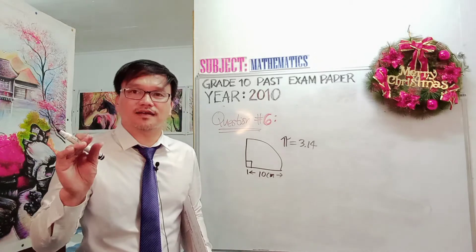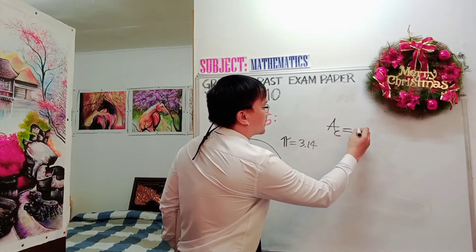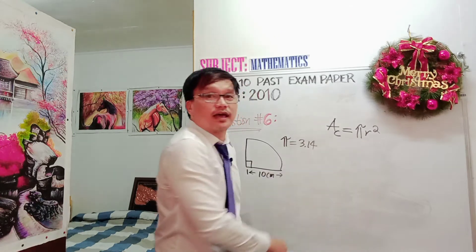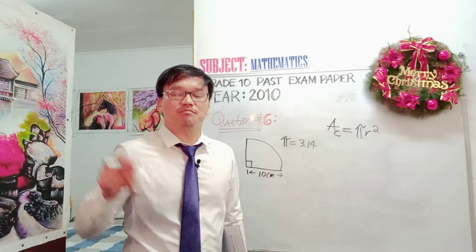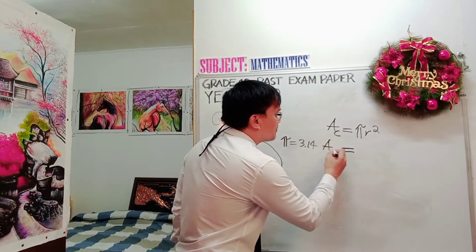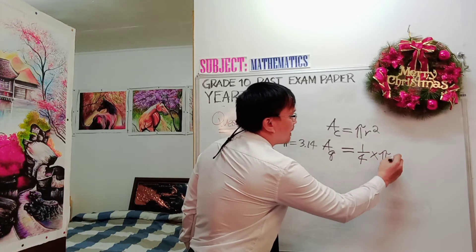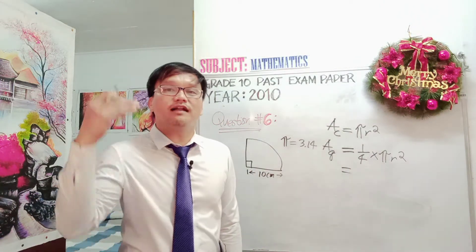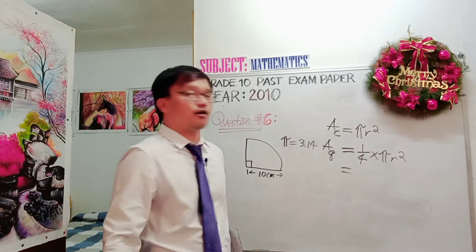You're not going to use pi as 22 over 7 because the value is stated there because the options are expressed in decimal. So quadrant is a quarter of a circle. Now, go back to the area of the circle. Area of the circle is equal to pi r squared. This is the formula that you are going to use if you are calculating the full area of the circle.